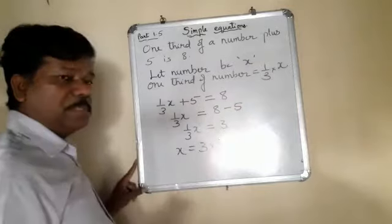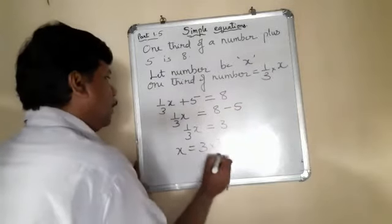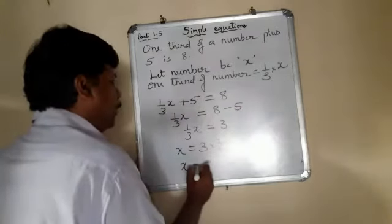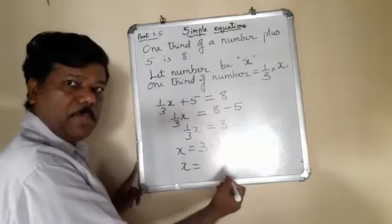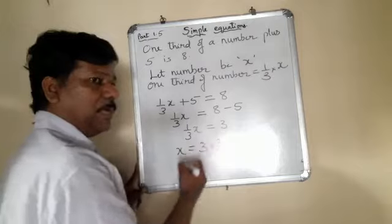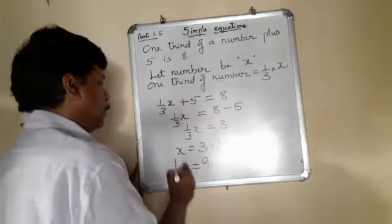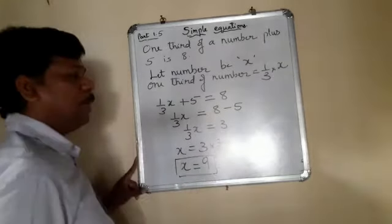The reciprocal of this will be formed. So x, therefore, is how much? 1 by 3 became 3 by 1. So 3 multiplied by 3 by 1 is 9. So x here is equal to 9.